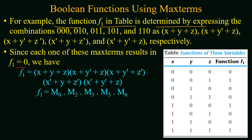Looking at the table, combinations 0,0,0 and 0,1,0 and 0,1,1 and 1,0,1 and 1,1,0 all have a function value of 0. Corresponding to these combinations we will make max terms. For 0,0,0 the max term will be x+y+z. For 0,1,0 the max term will be x+y'+z. For 0,1,1 the max term will be x+y'+z'.